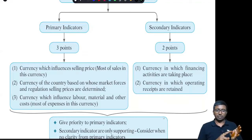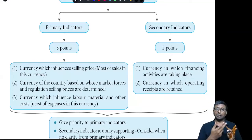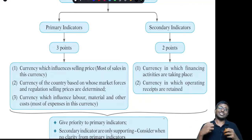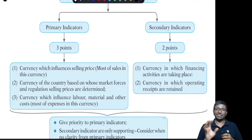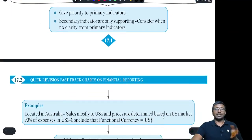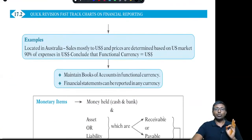The secondary indicators: first, how are you financing — in which currency you are issuing equity, share capital, debentures — in which currency debt or equity is coming. Second, your retained earnings — whatever profits you got, that retention is taking place in which currency. These secondary indicators are supporting indicators, not the basic deciding indicators. Primary indicators get first priority. Secondary indicators are only consulted when you are not able to decide with the help of the primary indicators. You are supposed to maintain books of accounts in functional currency.